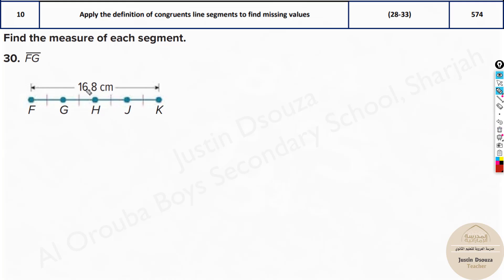So what you can do is you can directly count the number of segments 1, 2, 3, 4 and divide 16.8 by 4. It'll be 4.2. So this is the answer in centimeters.